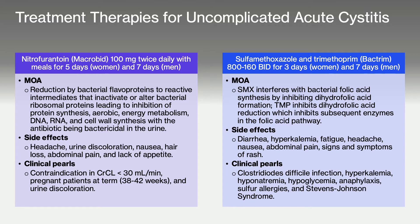Next, we have second-line treatment, which is Bactrim — sulfamethoxazole and trimethoprim — at 800/160 milligrams twice daily for three days for women and seven days for men. This medication is considered second-line because it has a higher rate of resistance in the community. Side effects include diarrhea, hyperkalemia, and signs and symptoms of rash. Major warnings include the risk of hyperkalemia (increased potassium), hypoglycemia (decreased blood sugar), anaphylaxis risk with sulfa allergies, and the need to discontinue at signs of rash, because that rash can progress to Stevens-Johnson syndrome.